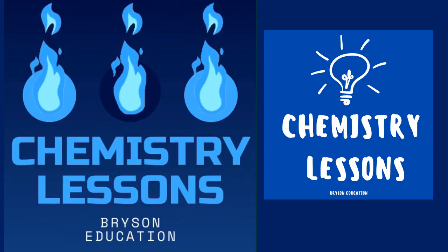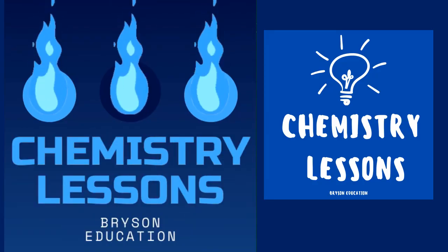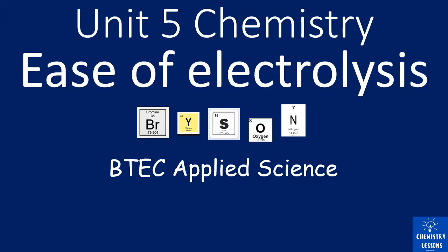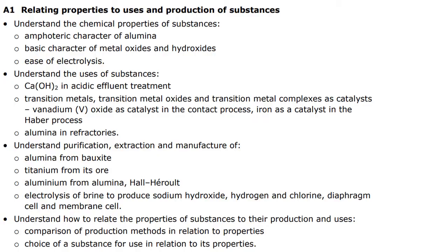Welcome to my channel on chemistry lessons. Please make sure you like and subscribe so you don't miss out on future content. This is a BTEC Applied Science Unit 5 chemistry lesson and it looks at the ease of electrolysis — the third bullet point on the spec. If you haven't seen the previous two videos, I suggest you go and watch those now.